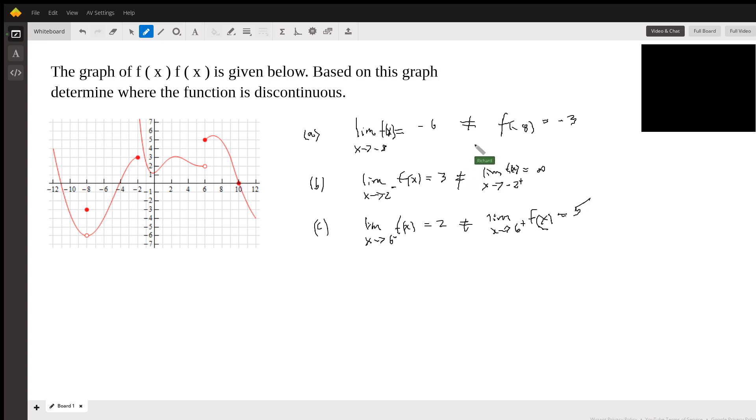So B and C are the same. The two-sided limit does not exist. A is a little bit different. As we approach negative eight, we have a two-sided limit here, but the function value is not the same.